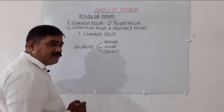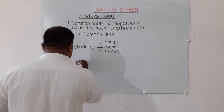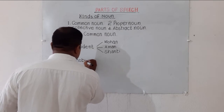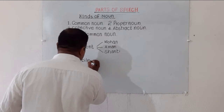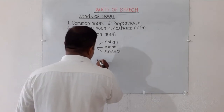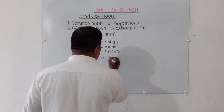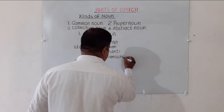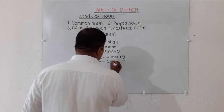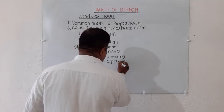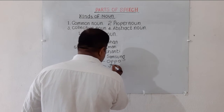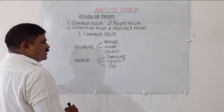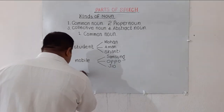Next, let me write down. Next word is 'mobile.' Mobile is a generic name for Samsung, Oppo, and Jio. Next, let me write down.